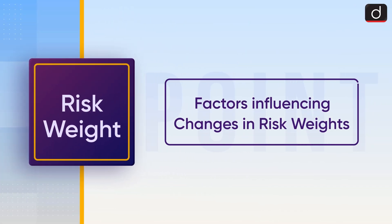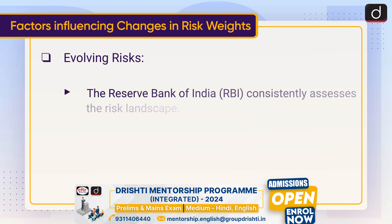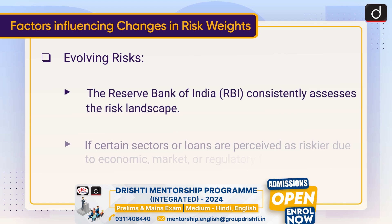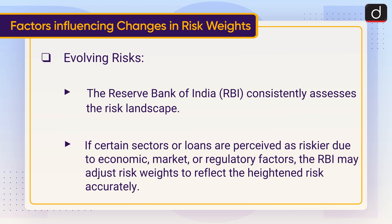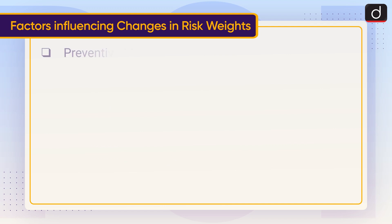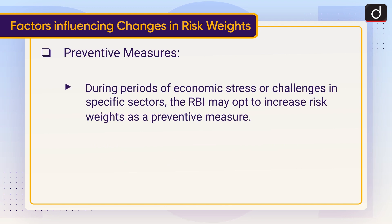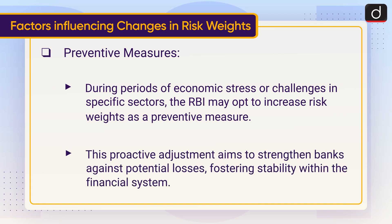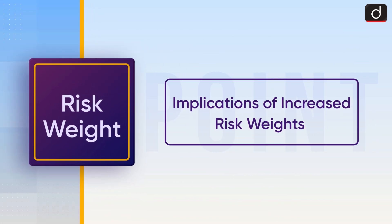Now let's discuss the factors influencing changes in risk weights. First, evolving risk: the RBI consistently assesses the risk landscape; if certain sectors or loans are perceived as riskier due to economic, market, or regulatory factors, the RBI may adjust risk weights to reflect the heightened risk accurately. Second, preventive measures: during periods of economic stress or challenges in specific sectors, the RBI may opt to increase risk weights as a preventive measure. This proactive adjustment aims to strengthen banks against potential losses, fostering stability within the financial system.